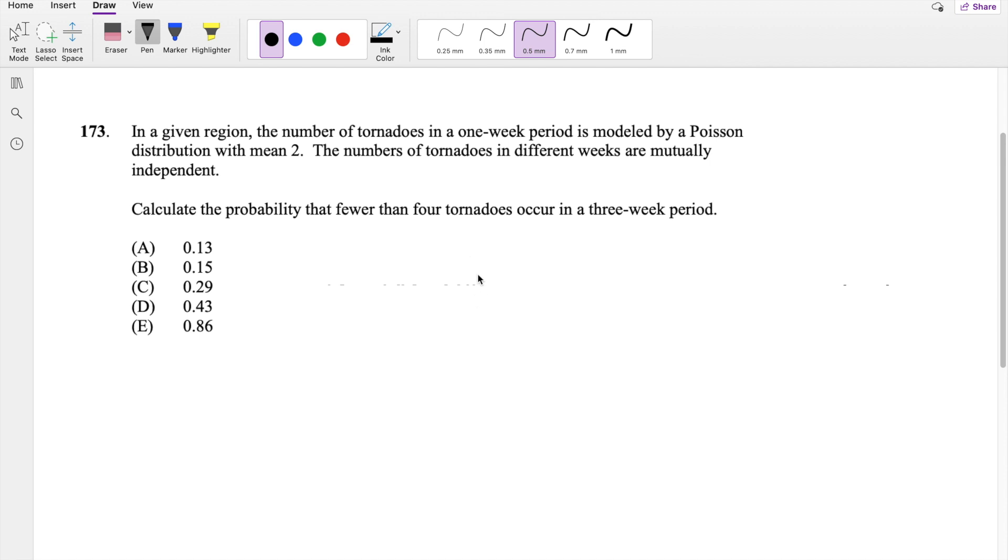Okay, as soon as you attempted, let's dive right in. This is a mutually independent Poisson distribution with a mean of, for 1 week is equal to 2. And we're looking for the mean of a 3 week period.